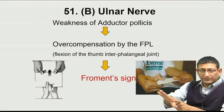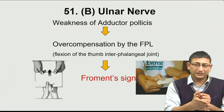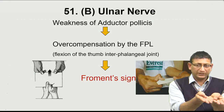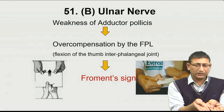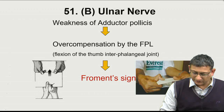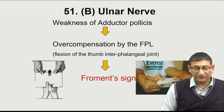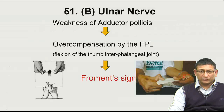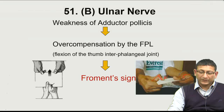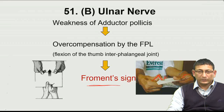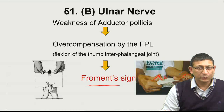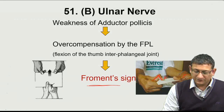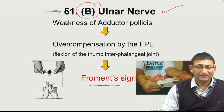If the adductor pollicis is not working, adduction is taken over by the flexor pollicis, which flexes the thumb. We ask the patient to hold a piece of paper. If the adductor pollicis works properly, they use it to hold the paper. If it's not working, the patient uses the flexor pollicis, showing flexion at the interphalangeal joint of the thumb — this is Froment's sign. It is positive in ulnar nerve injury because adductor pollicis is supplied by the ulnar nerve. The answer to question 51 is B.